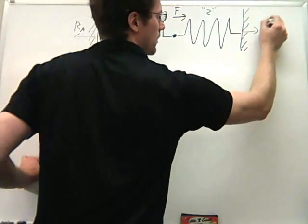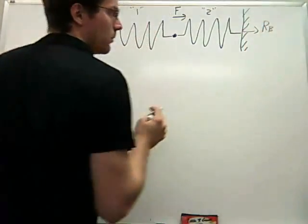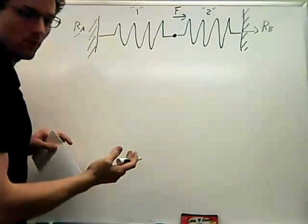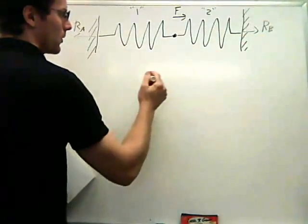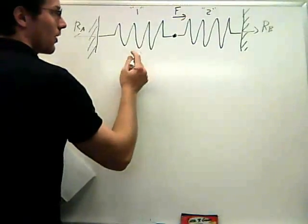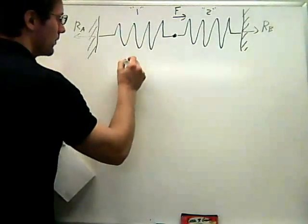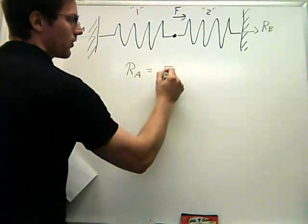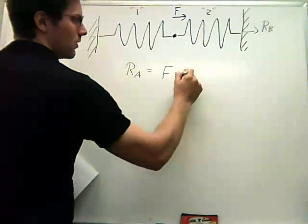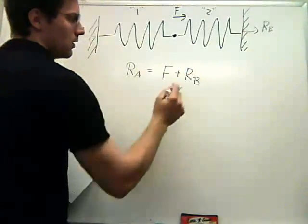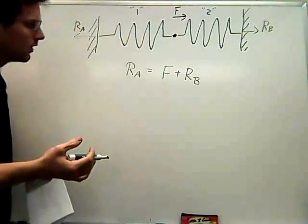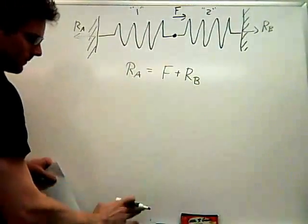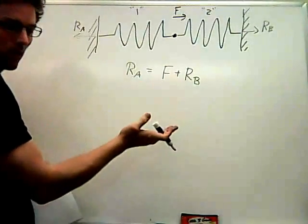And suppose I want to know what the reaction forces RA on the left and RB on the right are. Okay, so again we have Newton's third law which says that all of these forces must balance. So this says that all the forces going to the left, that's RA, must be equal to all the forces going to the right, that's F plus RB. But this doesn't tell us what RA is because we don't know what RB is.